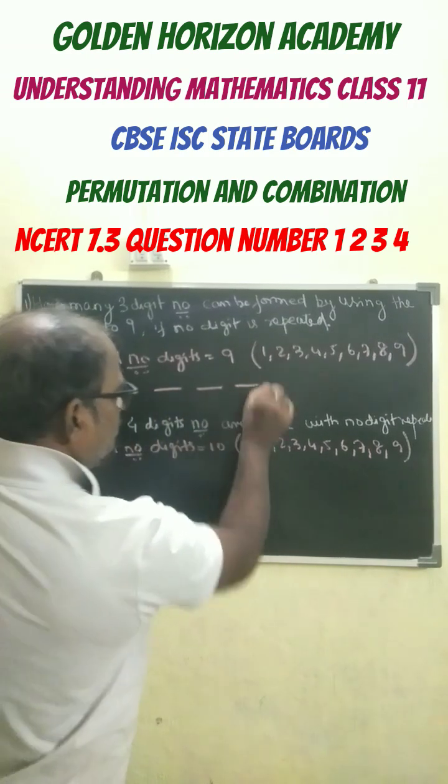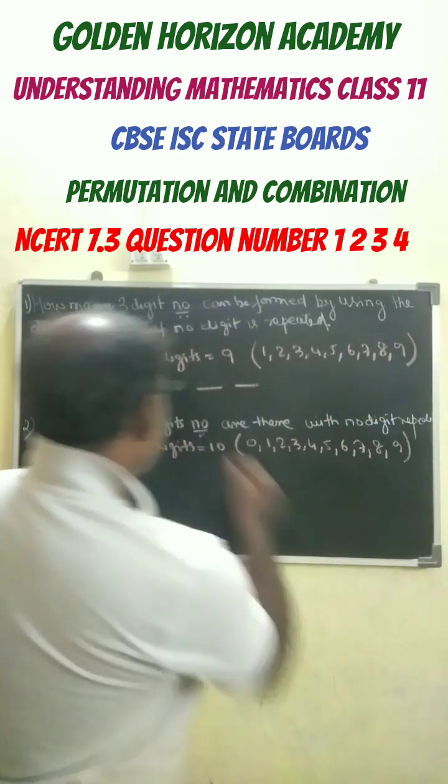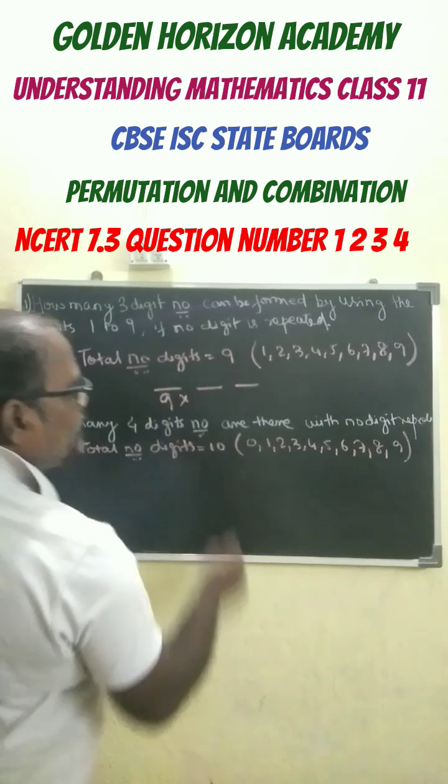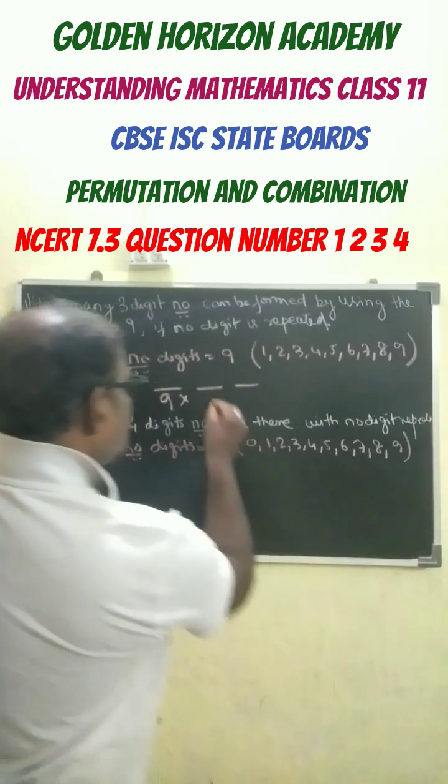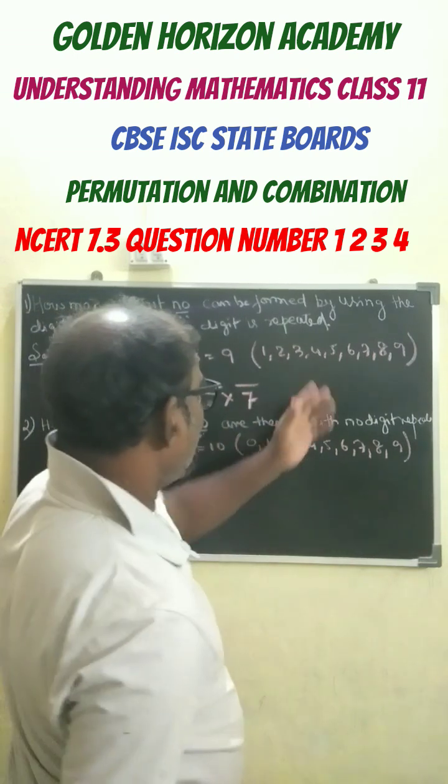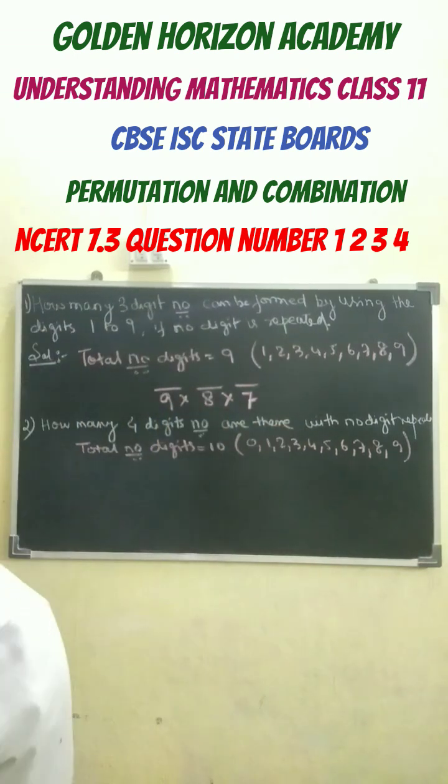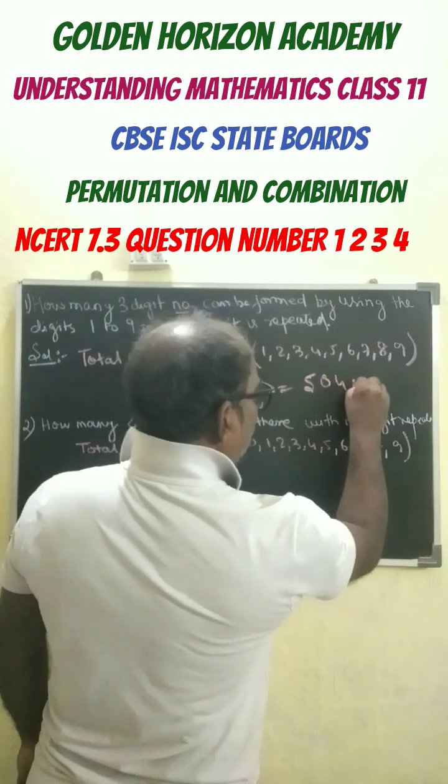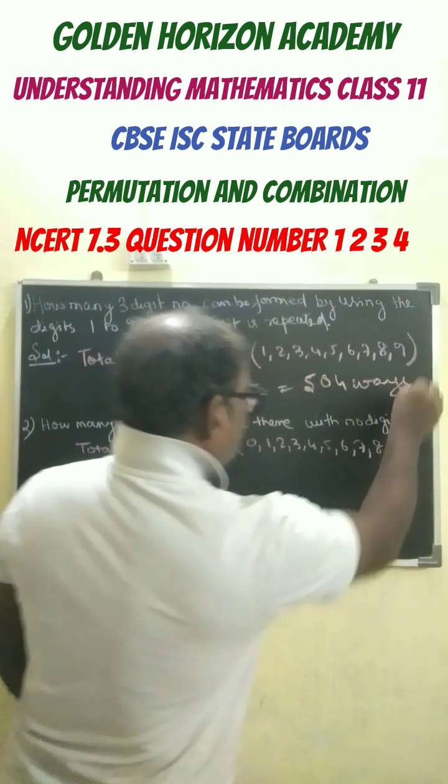For the three-digit number, from the nine digits available, this place can be filled in nine ways. Then the remaining eight digits means this can be filled in eight ways, and the remaining is seven. So nine into eight into seven equals 504 ways, which is the answer.